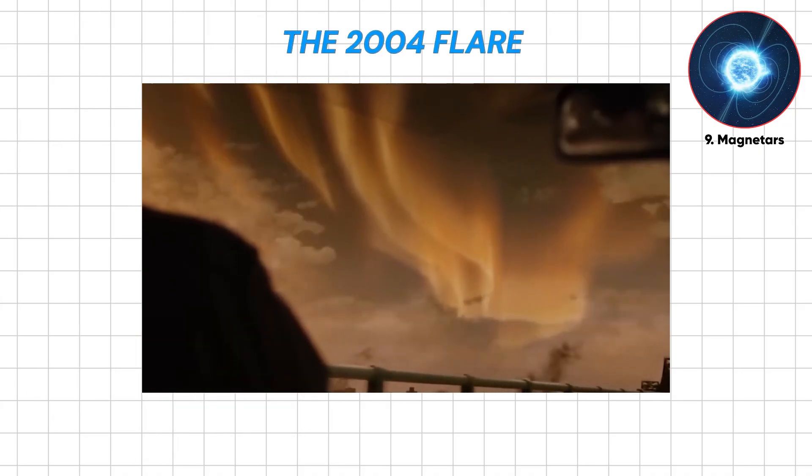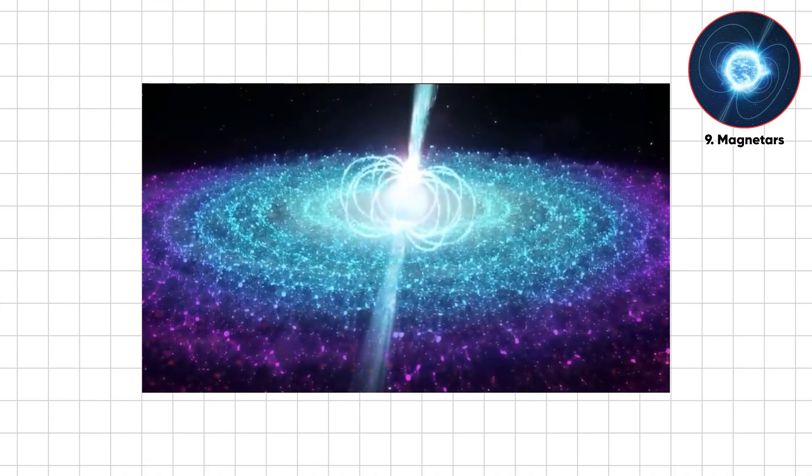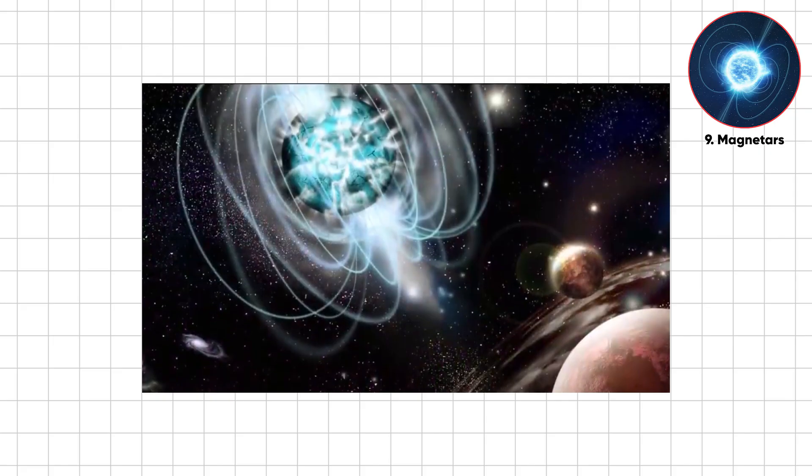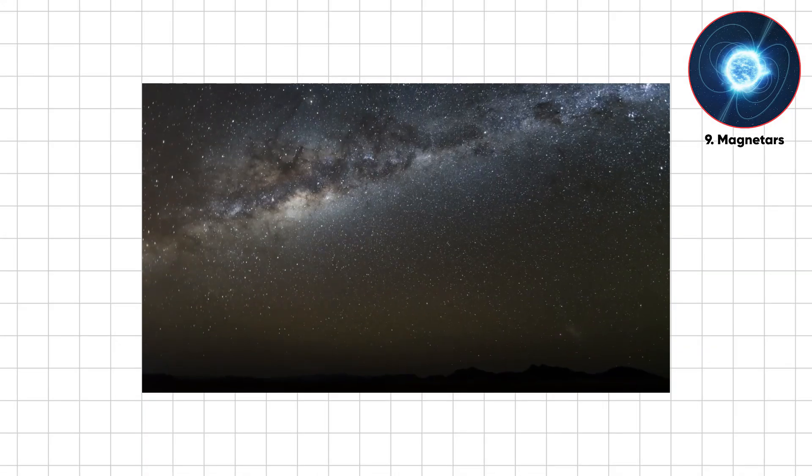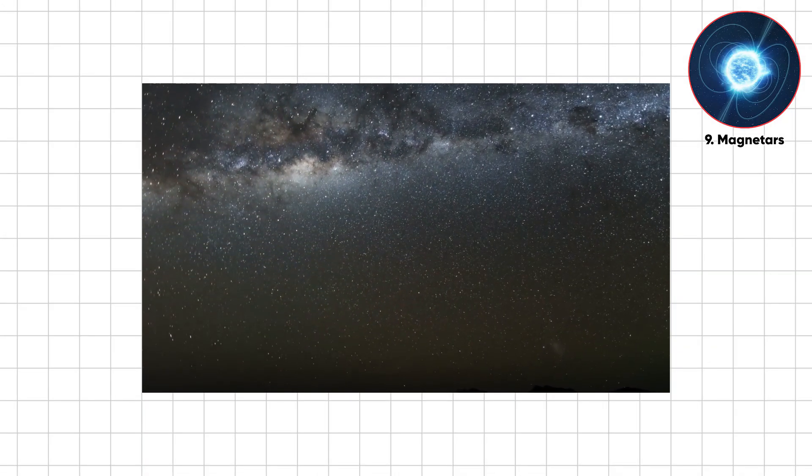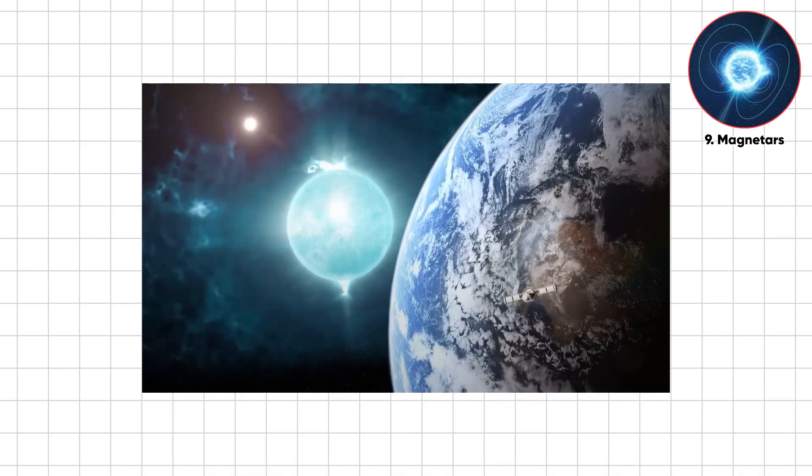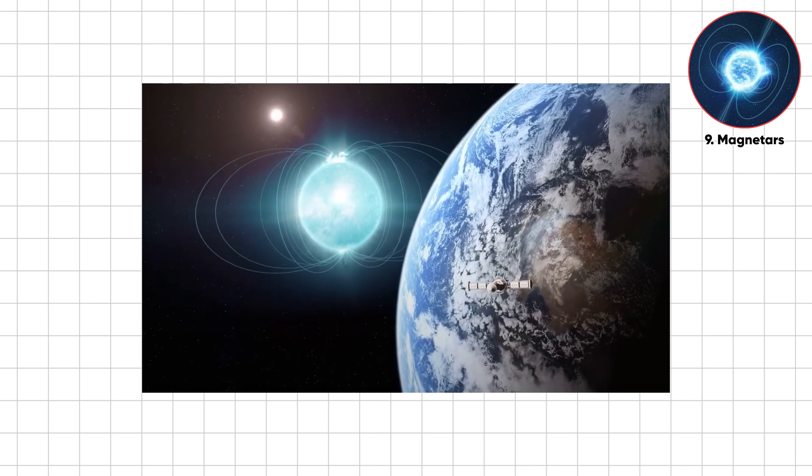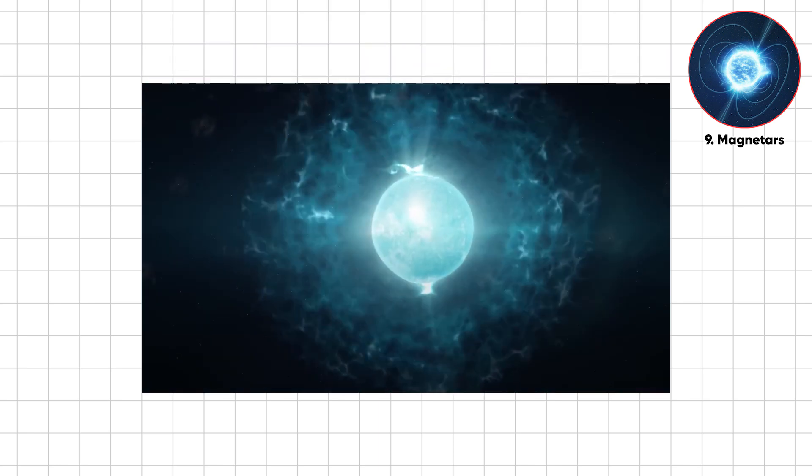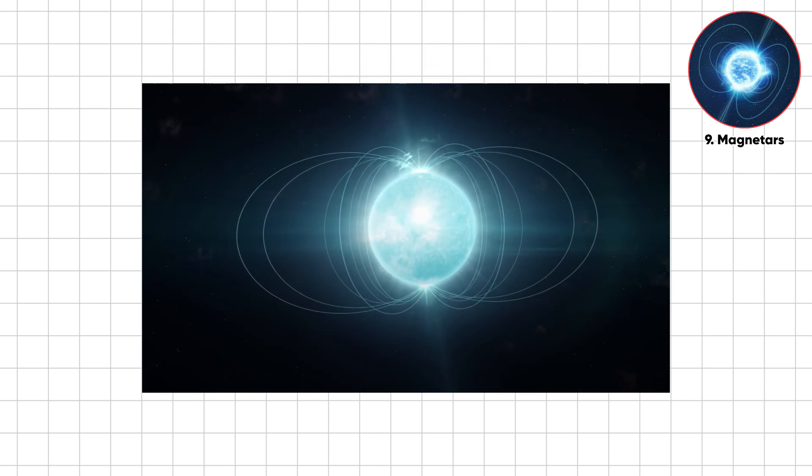The 2004 flare was so powerful that if it had been just a little closer, it could have set off a planetary catastrophe. Thousands of magnetars probably lurk in our galaxy, unpredictable and ready to explode. But if midnight explosions aren't enough to spike your adrenaline, get ready for the universe's brightest and most blinding lighthouses of destruction.